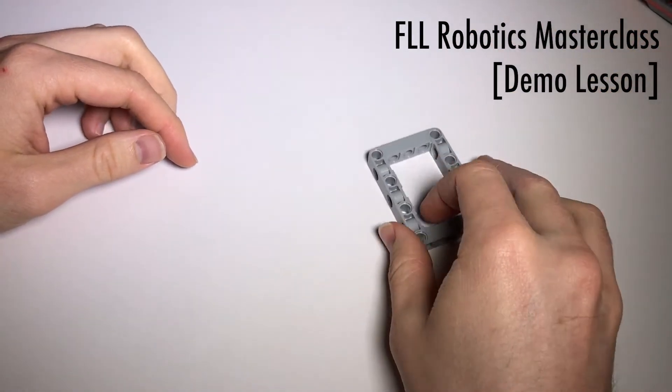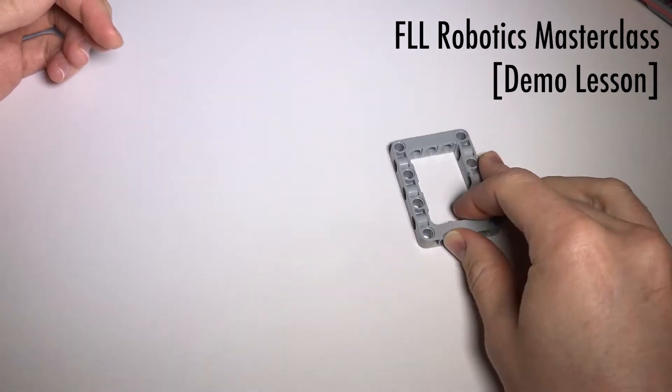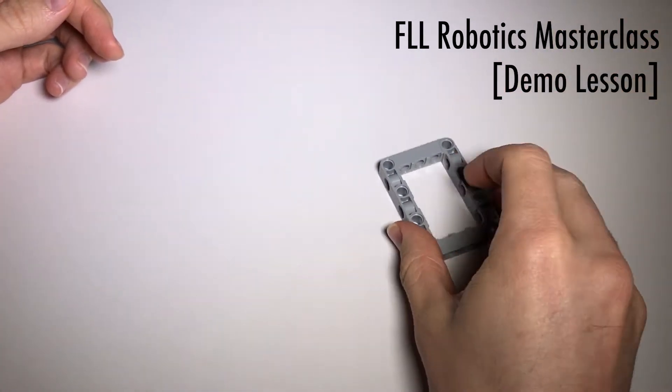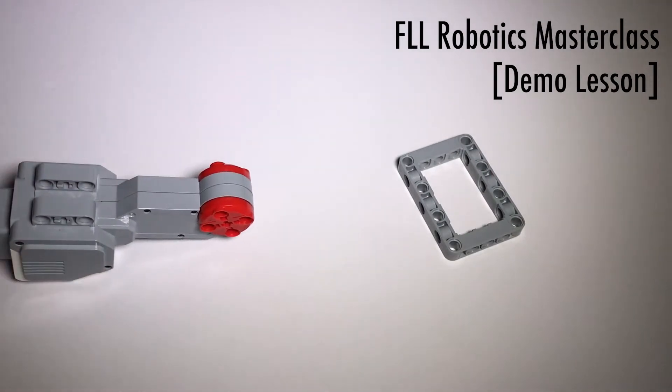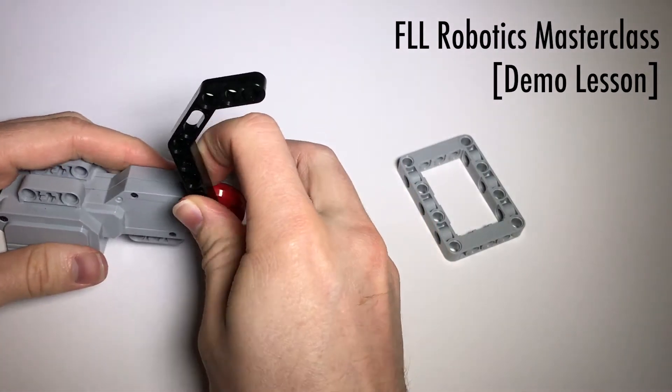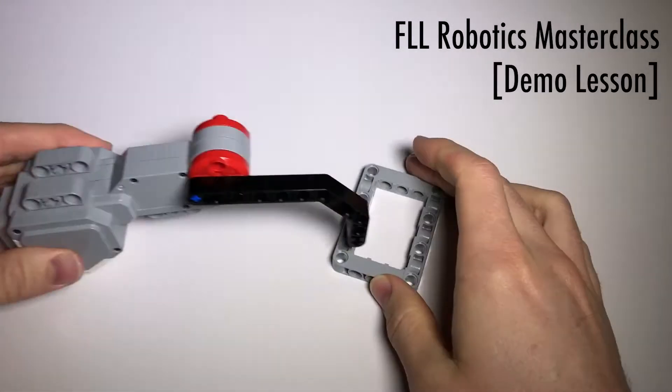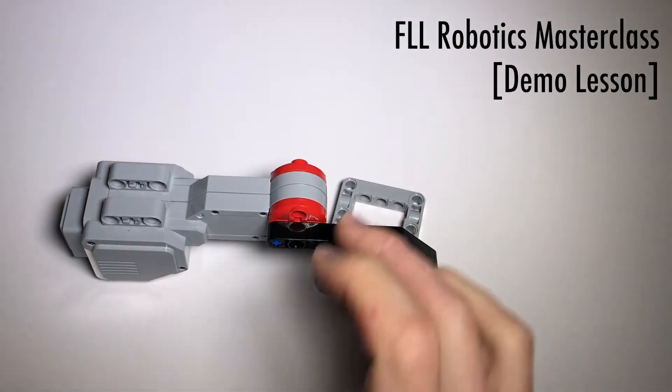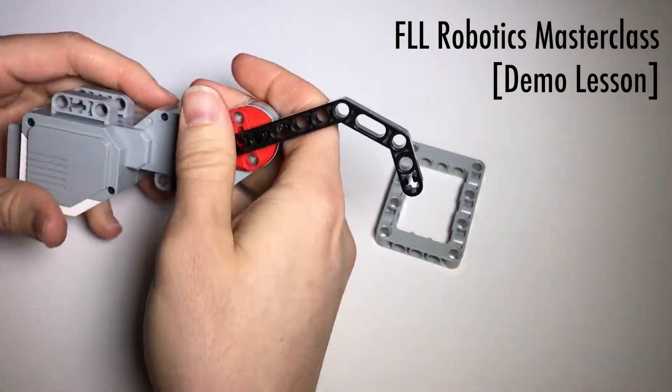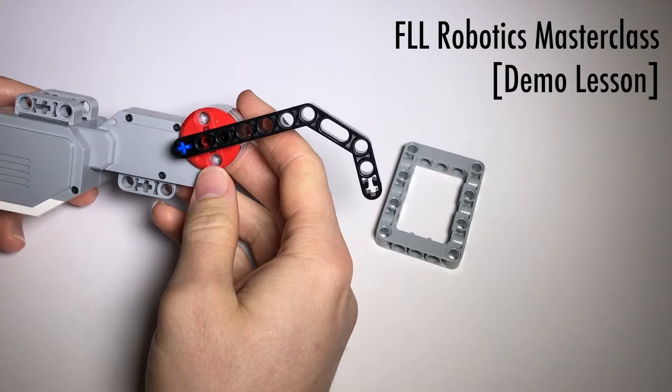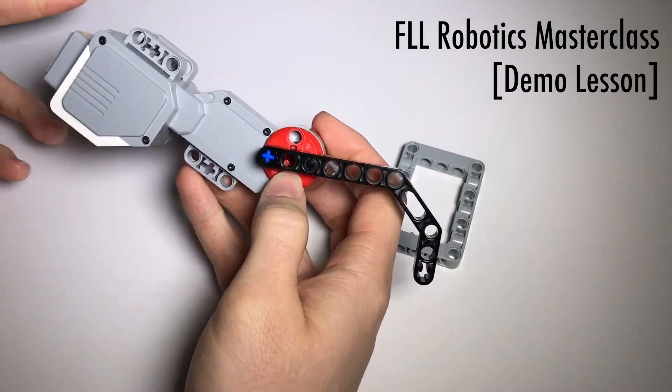So let's say that your challenge is to grab this and bring it back to base. Now given the shape of this, the first thing you might think of is to attach a motor to the front of your robot and use a little pointy arm-like device to stab it and bring it back. That could work, of course, but there are a lot of problems with this. First of all, just the fact that it uses a motor, which severely limits your strategy, especially if you're trying to combine a lot of missions together.